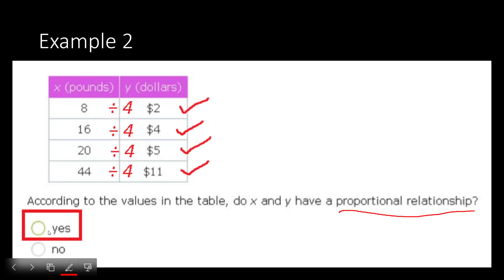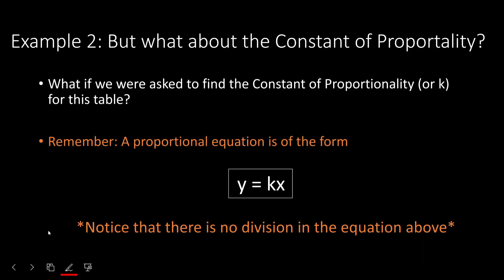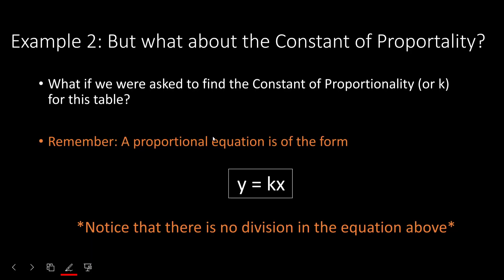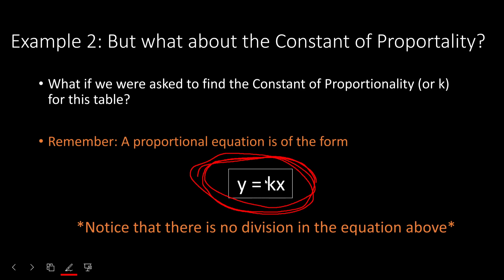These questions may have multiple parts — you could very well be asked for the constant of proportionality, your k. Division works to check proportionality, but you need to be careful: if you need the constant of proportionality, you'll have to do an extra step if you decided to divide. Thinking back on y = kx, notice there is no division sign in this equation — it's multiplication. That is very important.